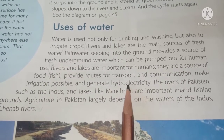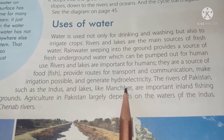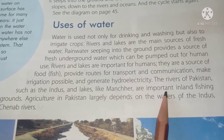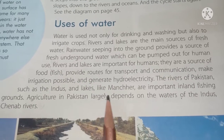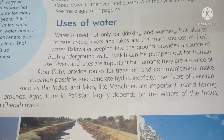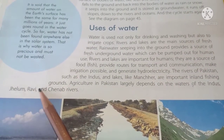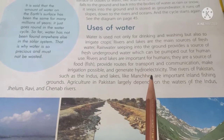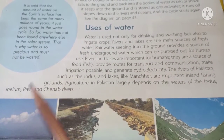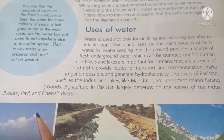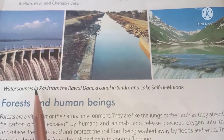The rivers of Pakistan such as the Indus, and lakes like Manchar, are important inland fishing grounds. Agriculture in Pakistan largely depends on the water of the Indus, Jhelum, Ravi, and Chenab rivers. These are the basic rivers that provide water and are the main sources of water in Pakistan.